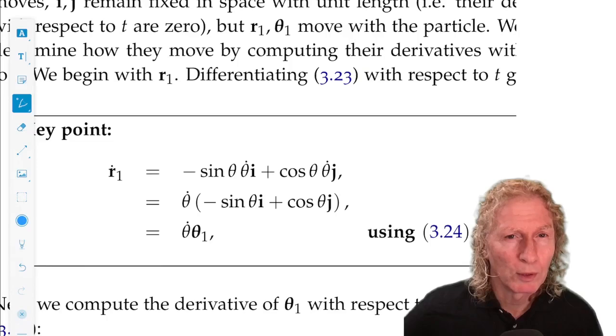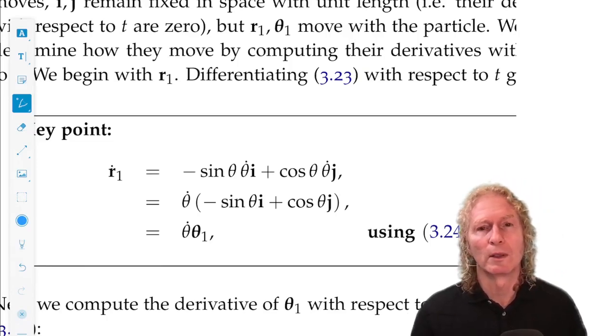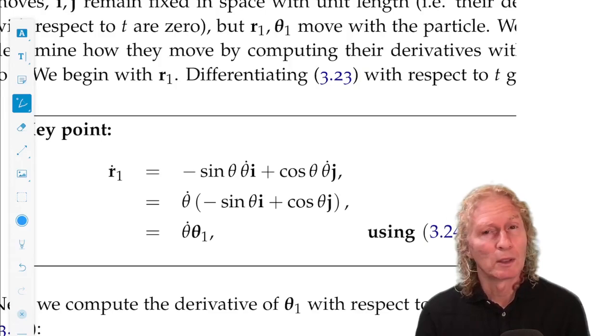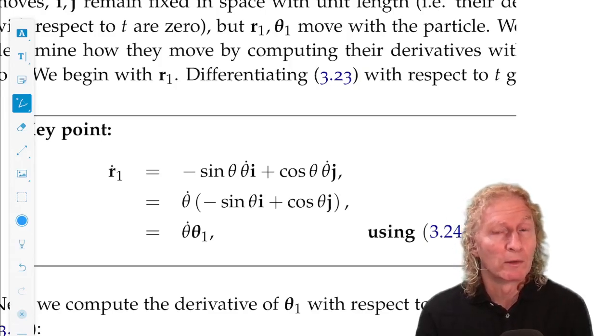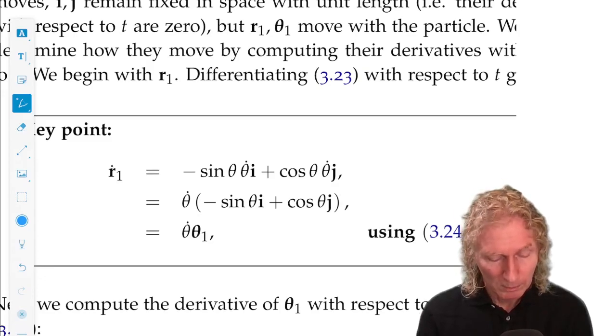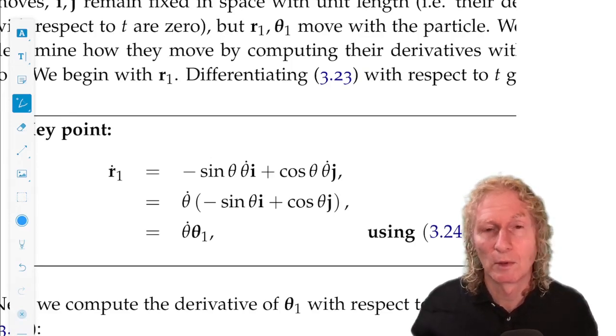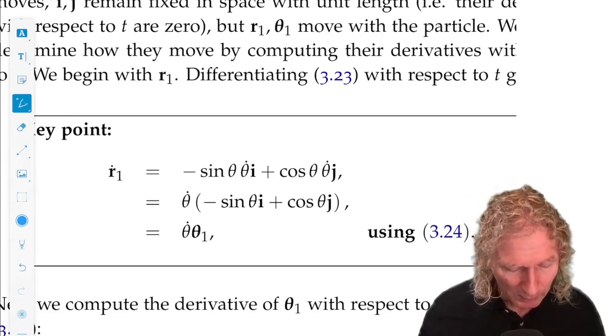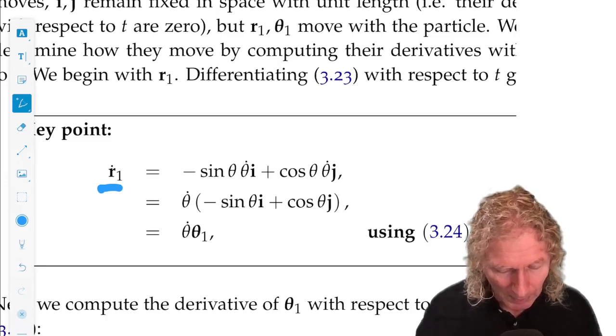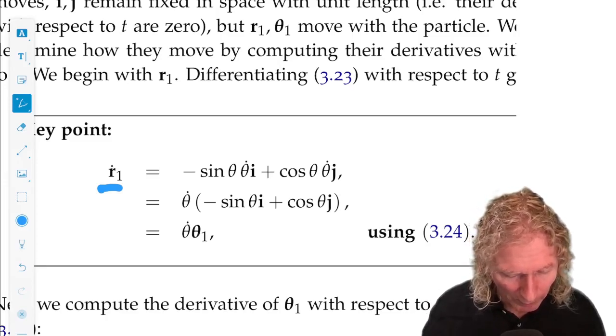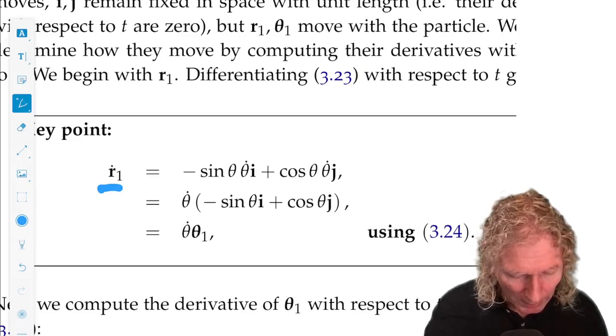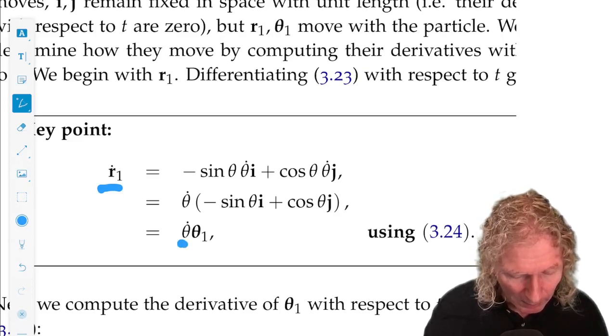Now we want to compute the time derivatives of r1 and theta1, because they can change in time as r varies. r can grow and it can rotate - r can change its length and its direction, in other words. But i and j, their length and direction are constant in time. So we just differentiate with respect to time, and we can easily see, using the relations we have already derived, that r1 dot is theta dot times theta1.